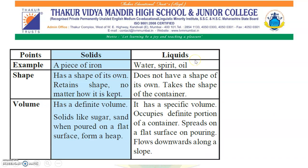Liquids — examples: water, petrol, oil. The shape of a liquid is not fixed; they do not have their own shape and take the shape of the container. Liquids have a specific volume — they occupy a definite portion of the container. They spread on a flat surface when poured and flow downward along a slope, so their volume depends upon the situation.